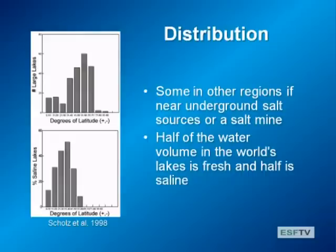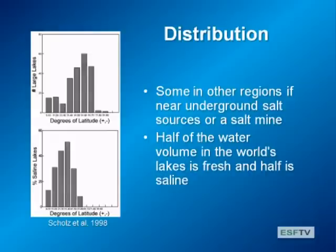About half of the water in the world's lakes is fresh and about half is saline. This is a figure from a paper where they were looking at large lakes, and you can see the distribution of the large lakes on earth from the equator going up to the poles. Most of them are either right at the tropics or in the temperate area. Most of the saline lakes are going to be right in those areas we talked about as being most dry—about 30 degrees north and south of the equator in those horse latitudes in those endorheic regions.